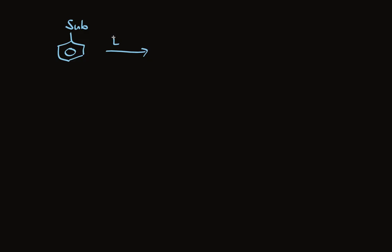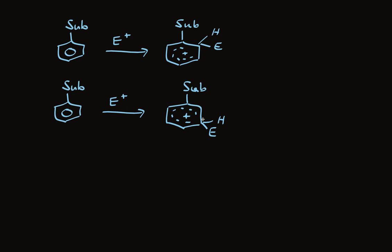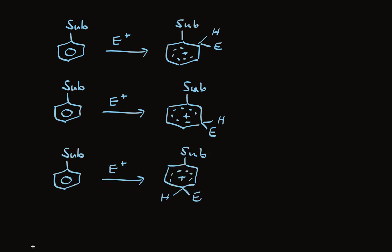Reaction of an electrophile with a substituted benzene can lead to ortho, meta, or para substitution. Notice it's the first step that determines the position of substitution — the second step is simply proton loss. The relative rates of these three first steps determine the relative rates of ortho, meta, and para substitution. If we can determine what governs the relative rates of formation of these intermediates, we can understand the product ratios.